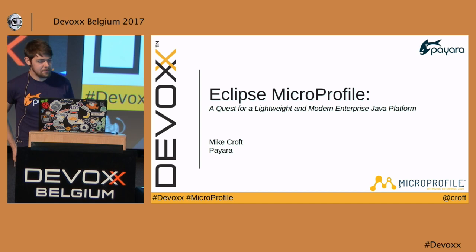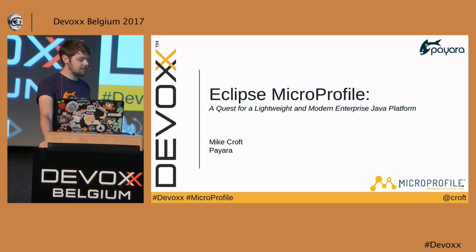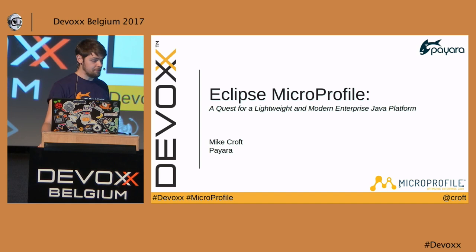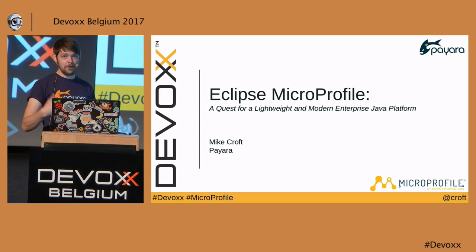This talk is titled 'Eclipse MicroProfile: A Quest for a Lightweight and Modern Enterprise Java Platform.' The thrust behind that title is a reference to criticisms thrown at enterprise Java in the past — that it's not particularly light or particularly modern — and really that's where MicroProfile came from.